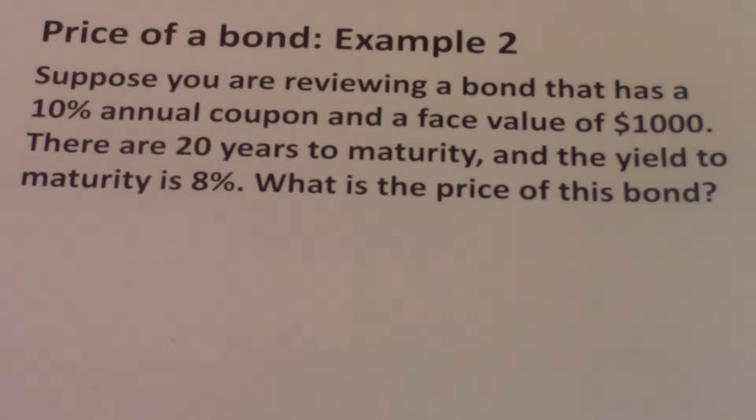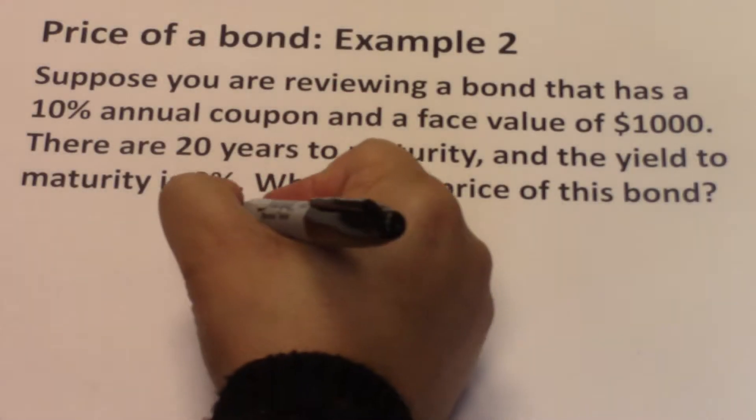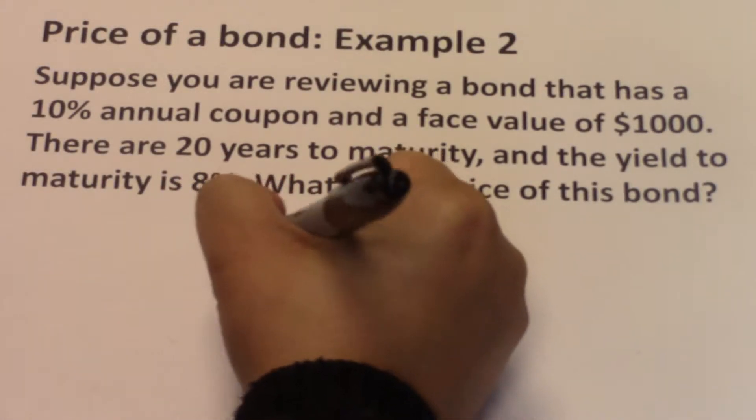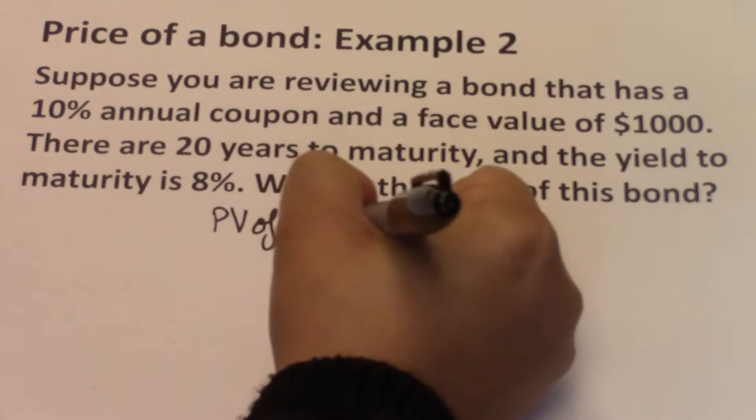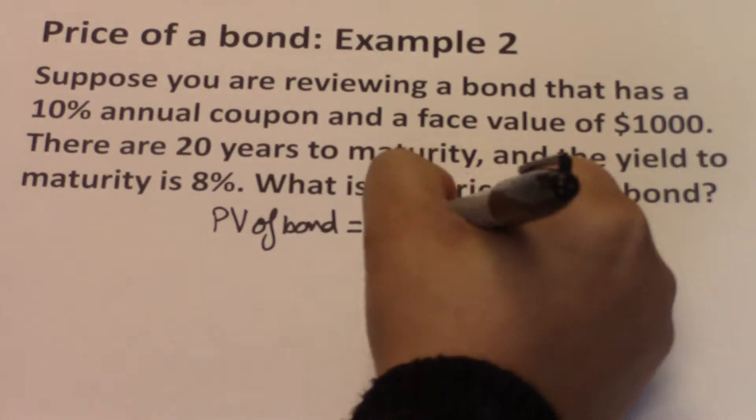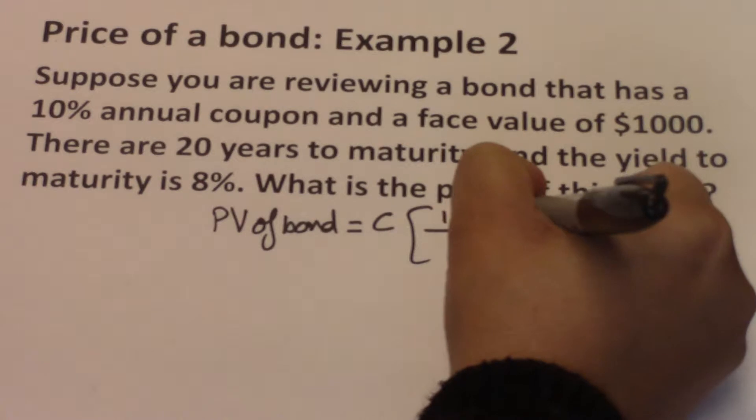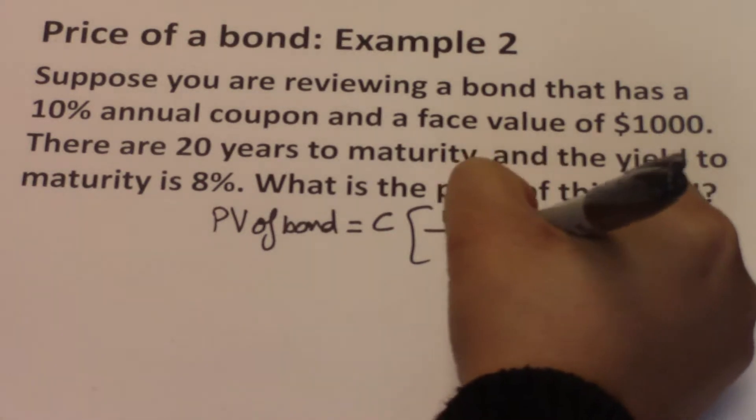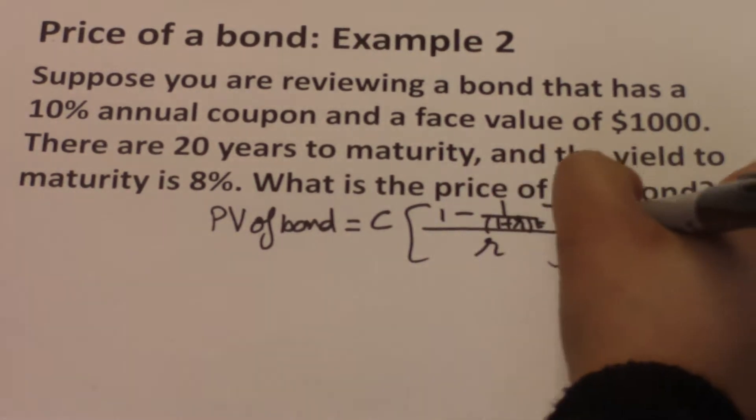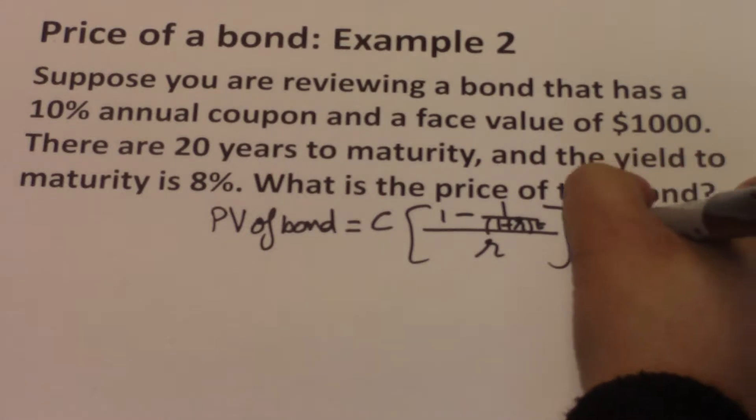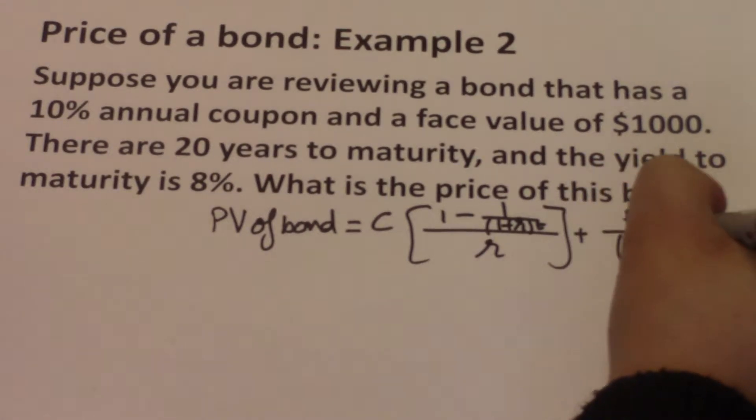We know that the price of the bond is determined using the present value formula, which says that PV of bond equals C times 1 minus 1 over (1 plus r) to the power t, over r, plus the future value over (1 plus r) to the power t.